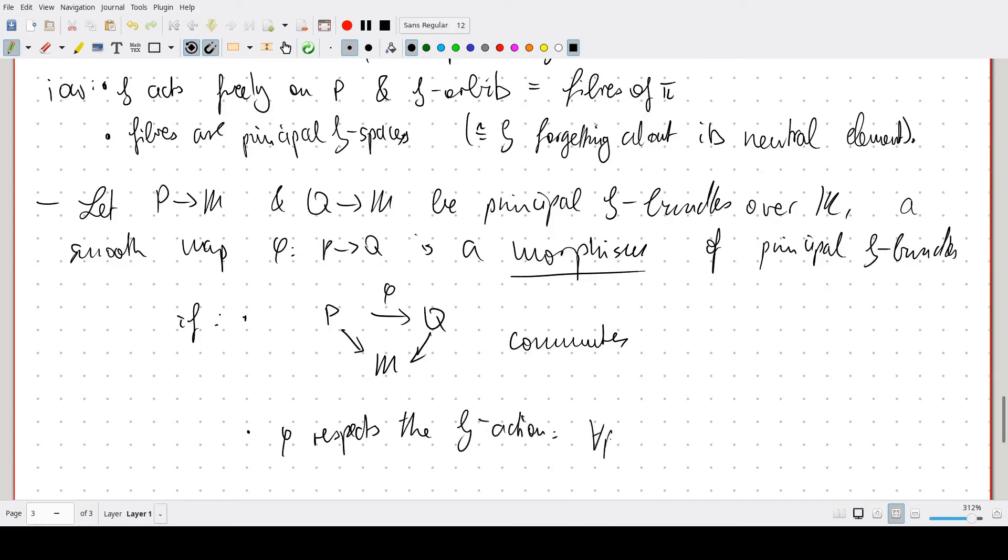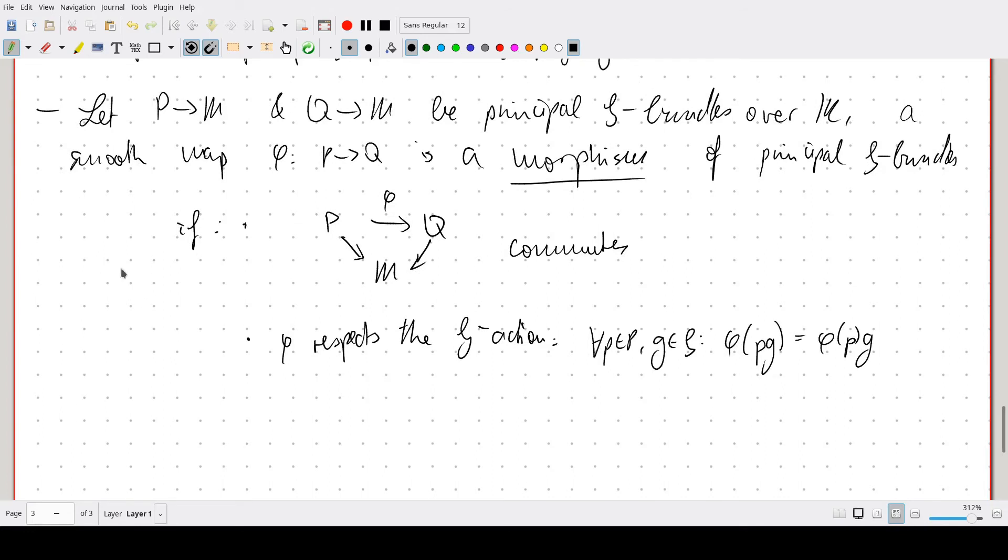So, if for every P in P and G in G, we have phi of PG is equal to phi of P, and then apply G. And again, principal G bundles over M form a category.